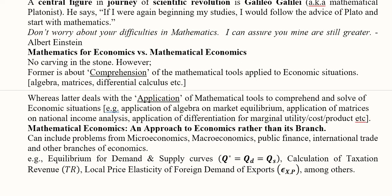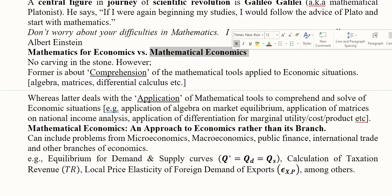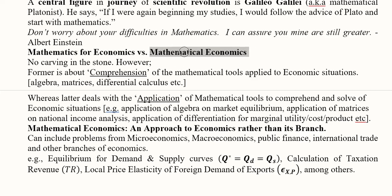Now we need to understand the difference between mathematical economics and mathematics for economists — there is a thin line between the two that is usually not felt, but we will try to shed some light on it. Mathematics for economics is a set of mathematical tools mainly, but when it comes to mathematical economics, it is basically economics in a mathematical flavor. This is the main difference: one is more about mathematical tools and the other is more about economics. Usually these things overlap, but we are trying to refine them a little bit.